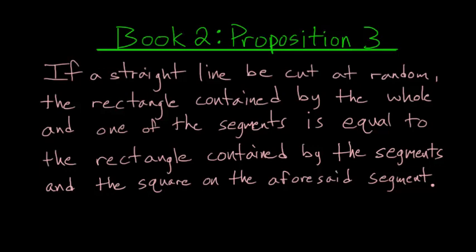For the third proposition of Book 2 of Euclid's Elements, if a straight line be cut at random, the rectangle contained by the whole and one of the segments is equal to the rectangle contained by the segments and the square on the aforesaid segment.